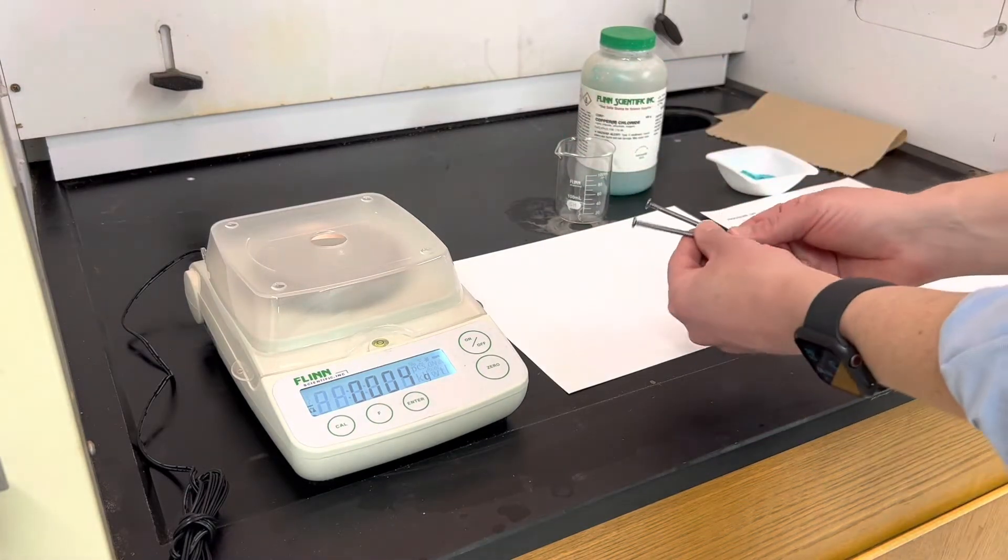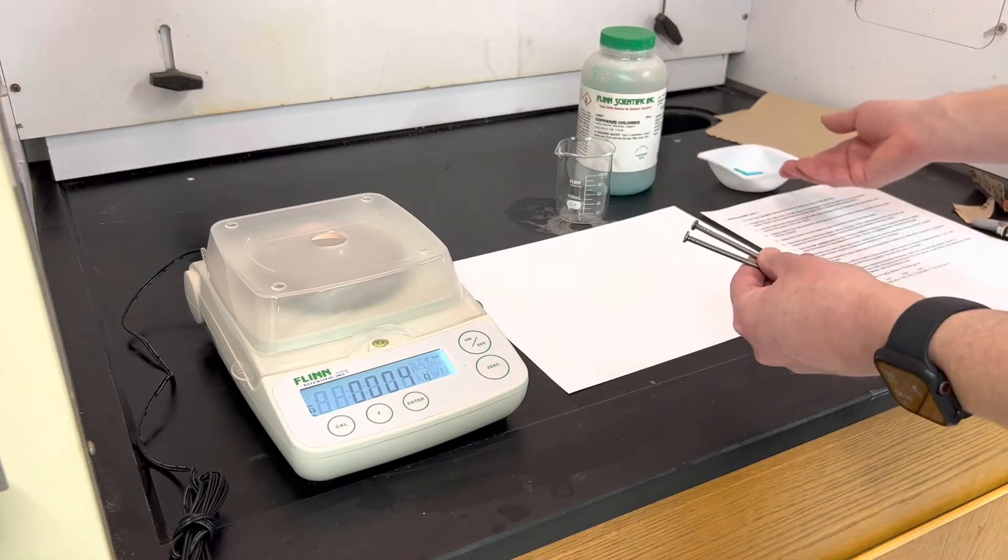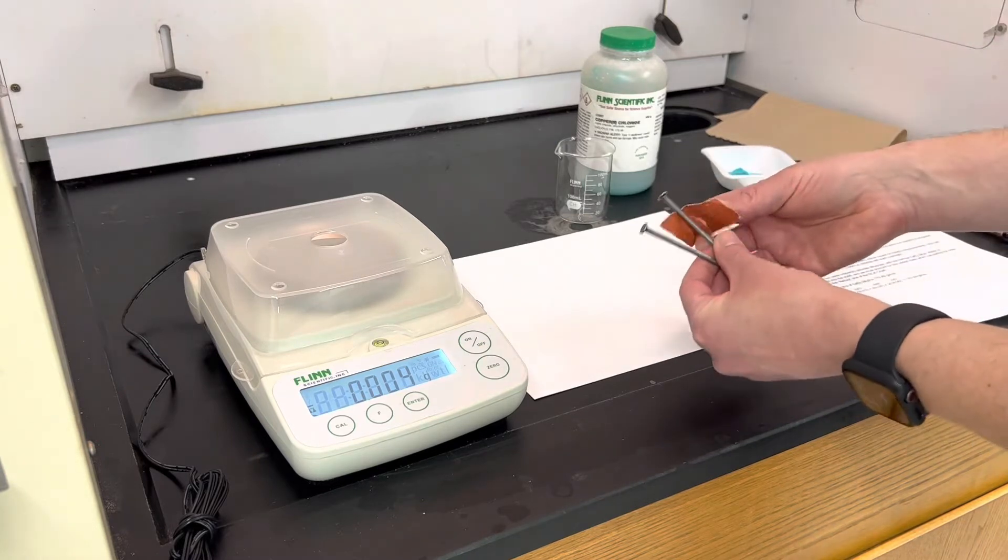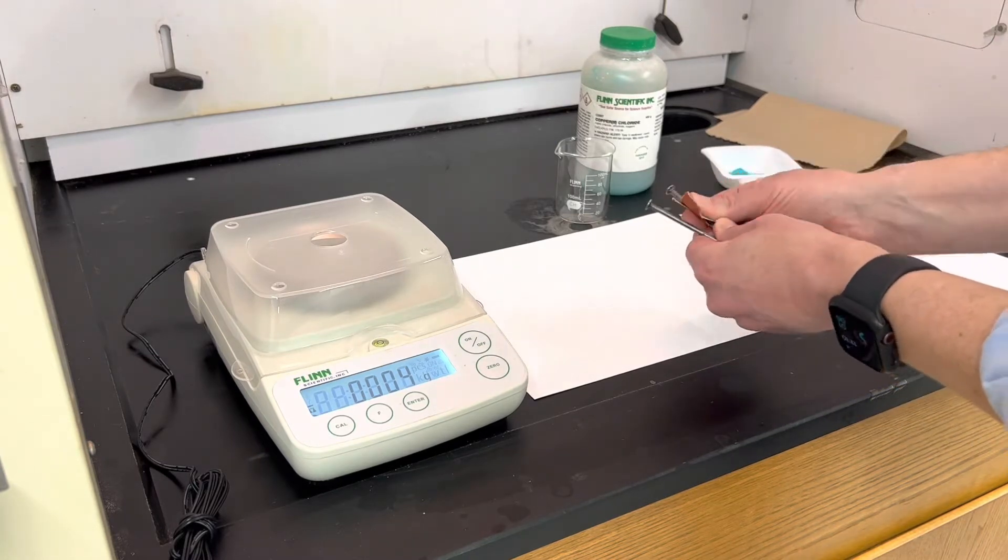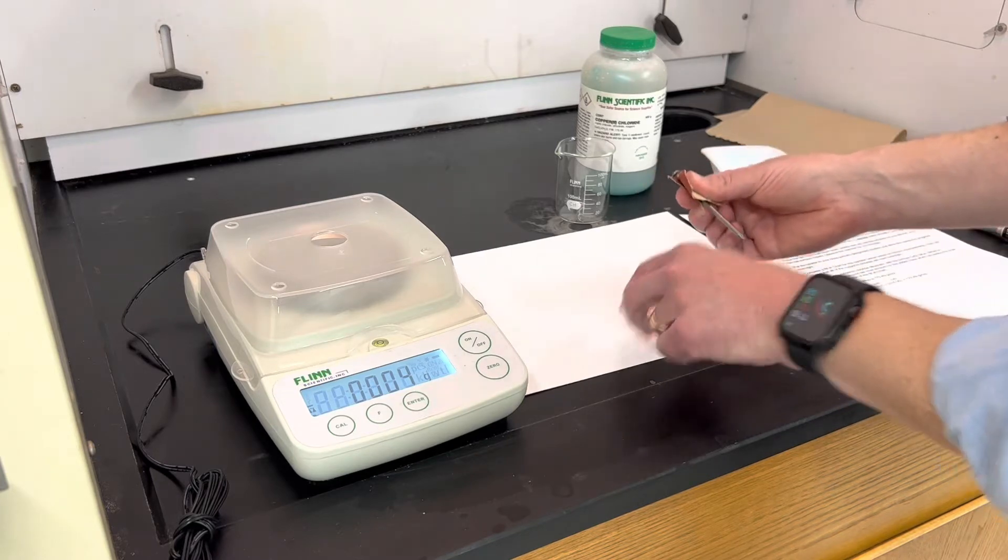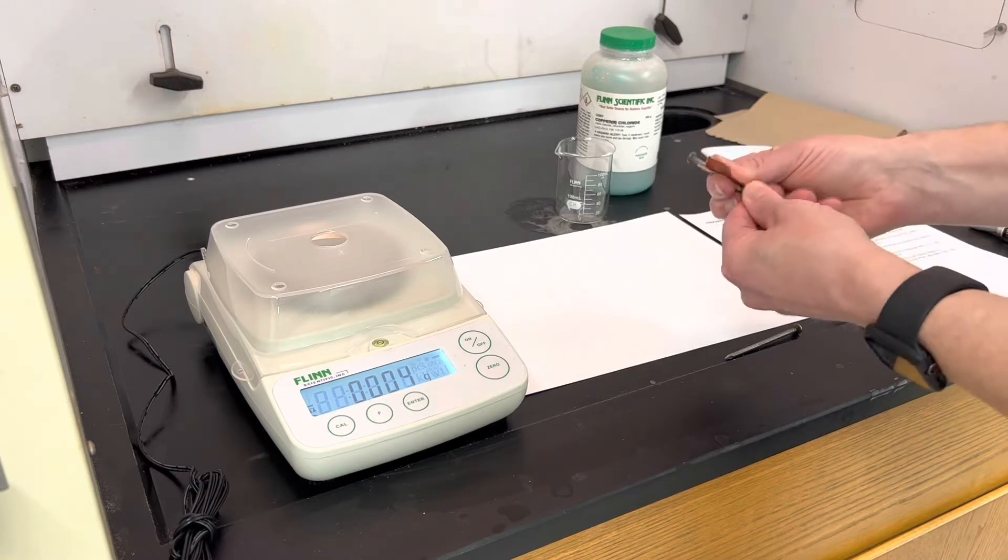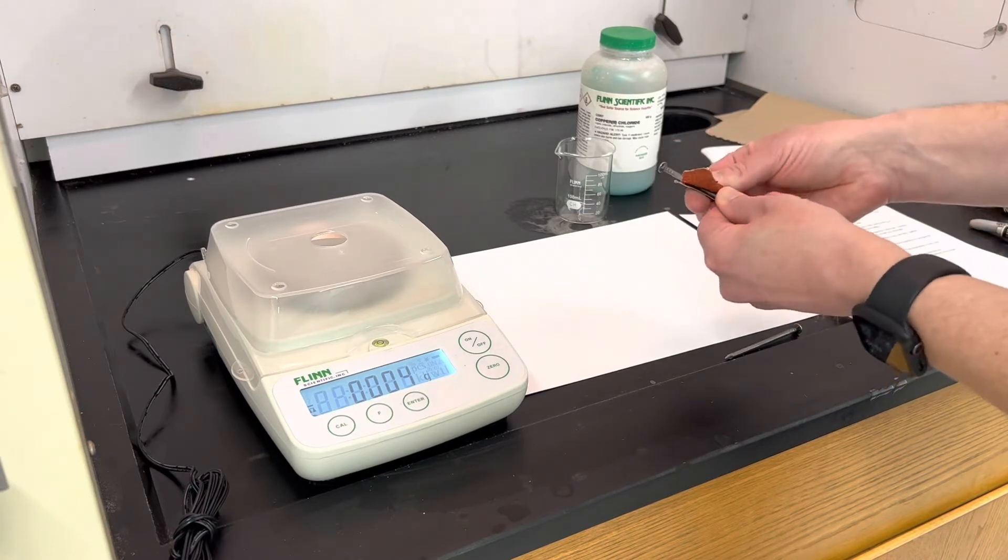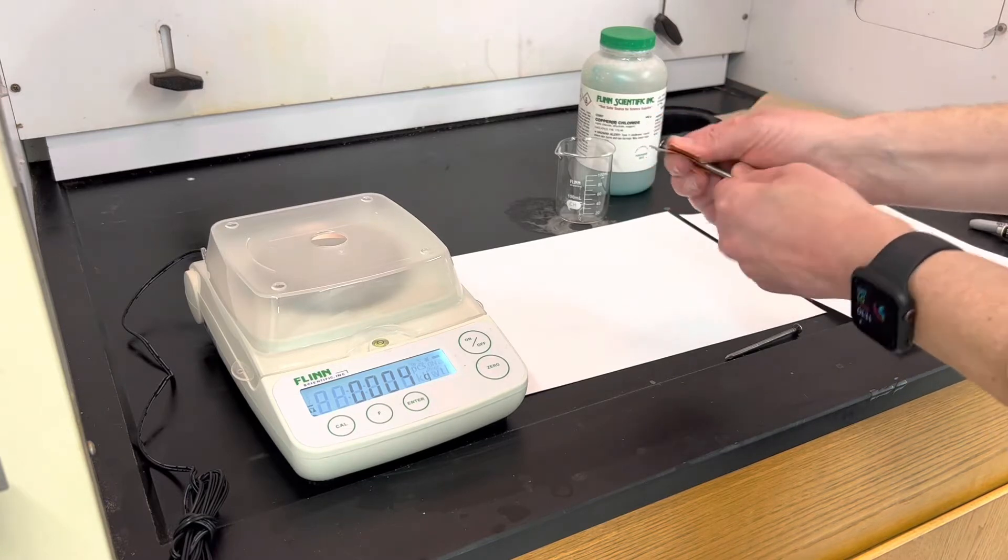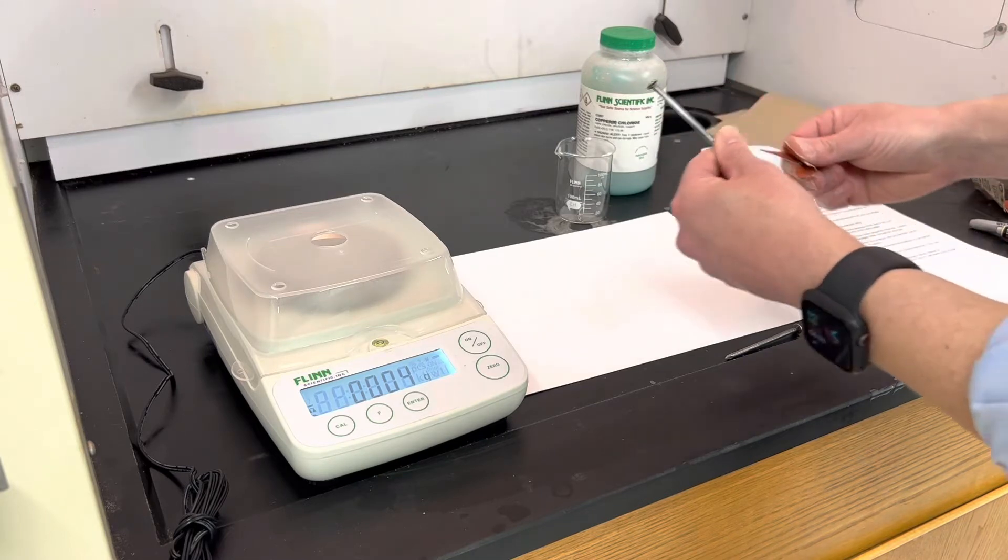The next thing you want to do is prepare two nails. They're the source of the iron for the reaction. The procedure will tell you to sand these, and all that does is scrape off any iron oxide that is on the surfaces. You want to make them a bit shiny. The reaction is going to take place on the end of the nail, the not pointy side. So you just want to rough those up a little bit until you see more of a shiny surface coming through on your nails.